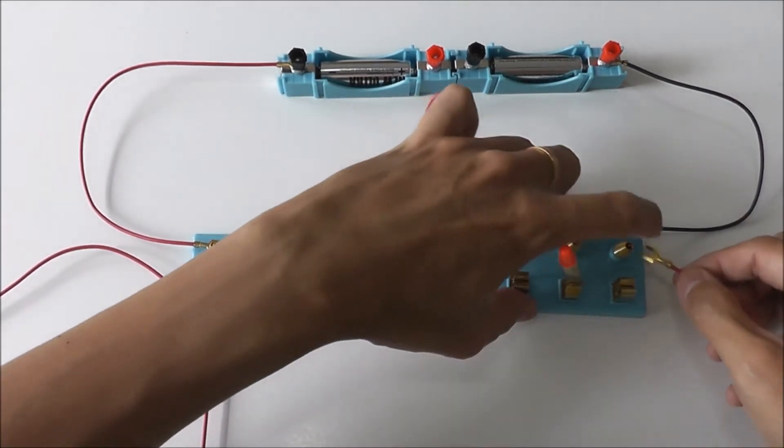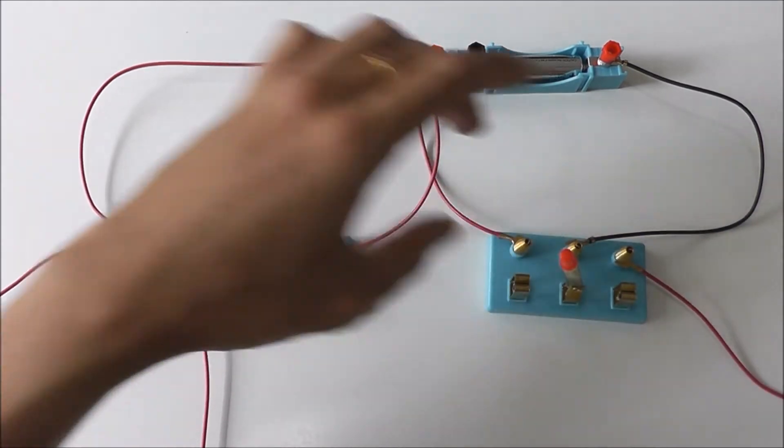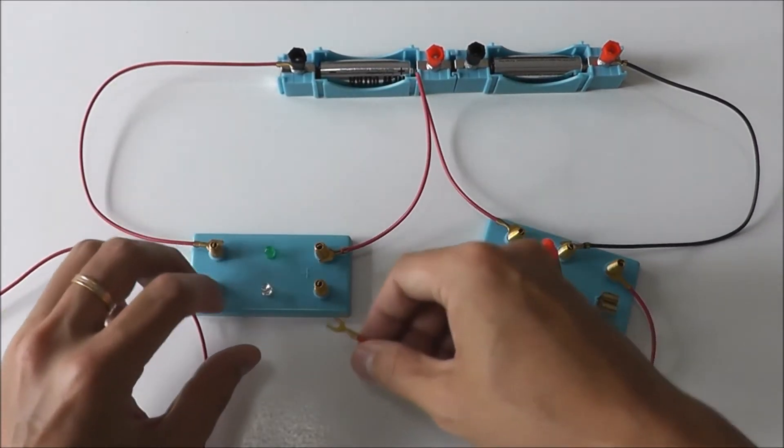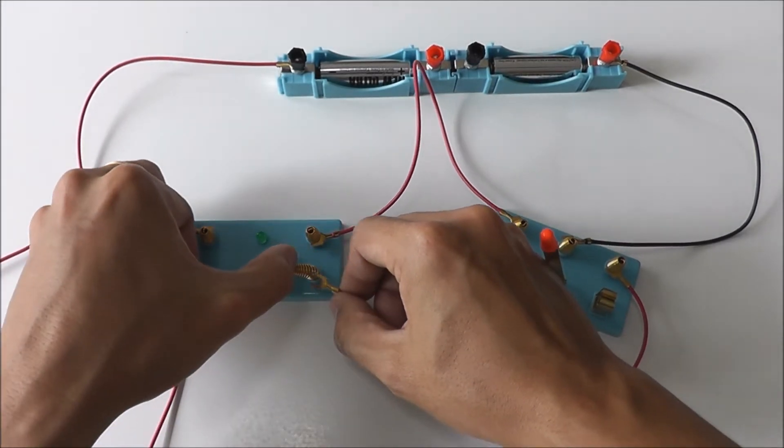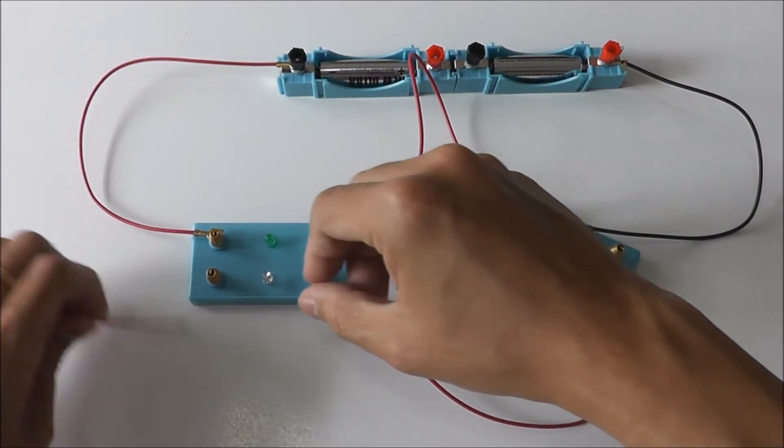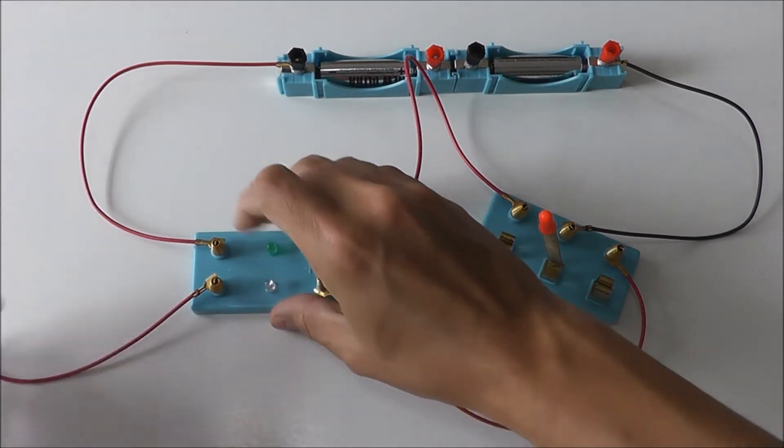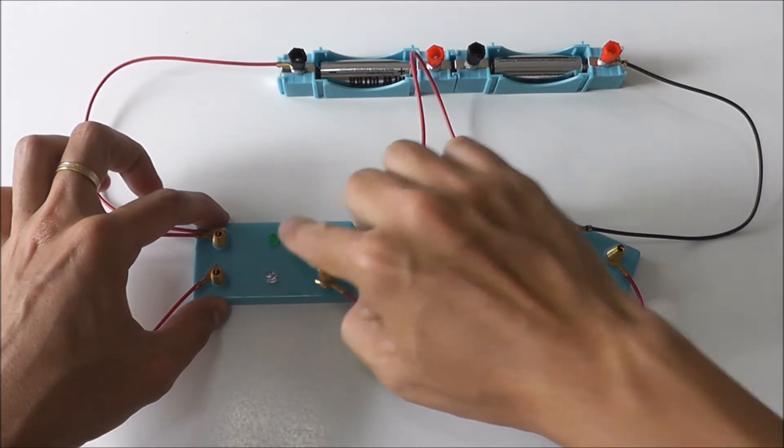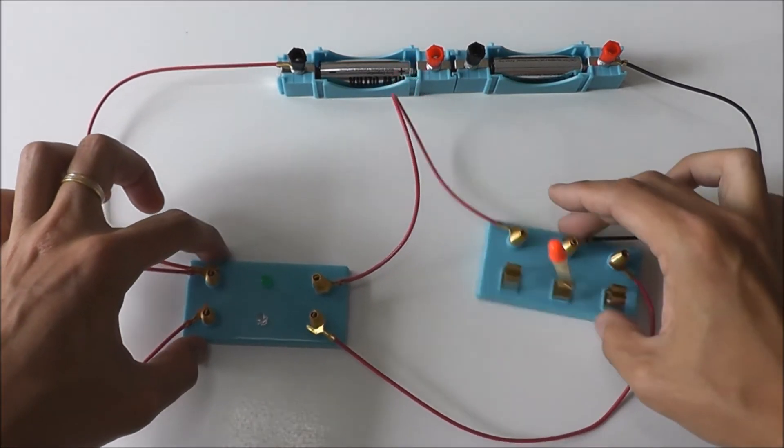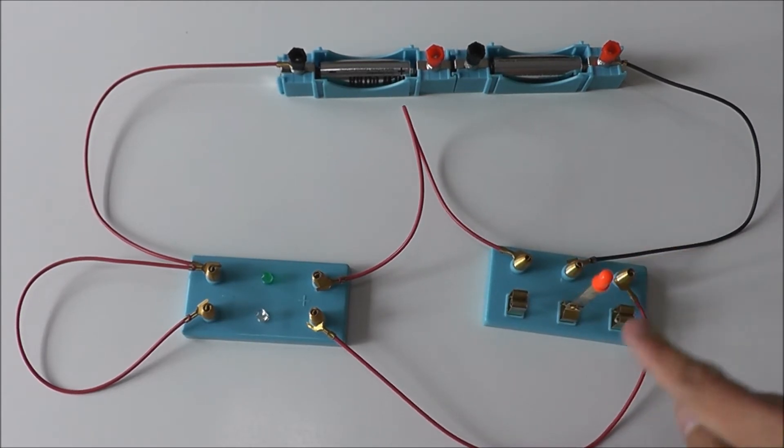Then the other side of the wire will go to the positive terminal of the blue LED. Lastly, connect the negative terminal of the blue LED to the negative terminal of the green LED. Now our traffic light circuit is done.